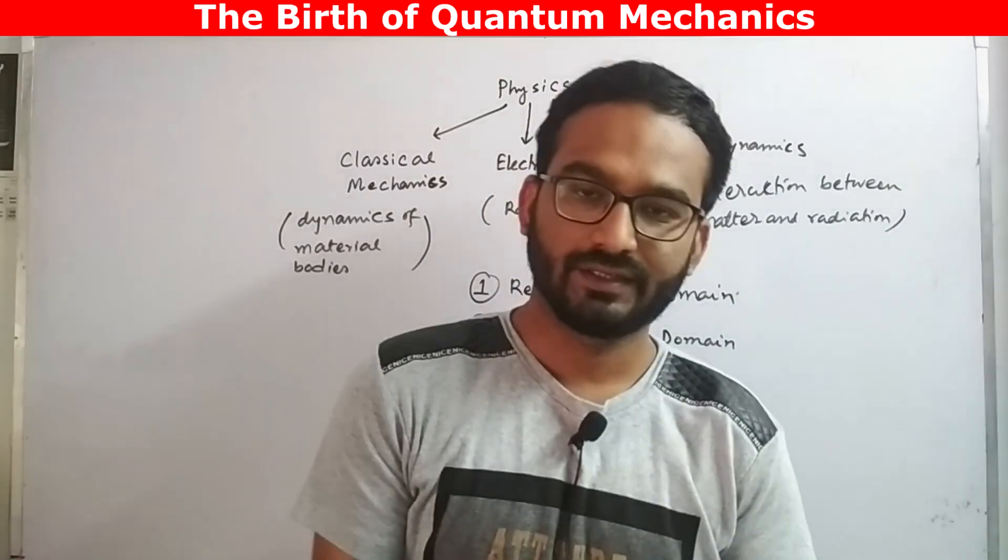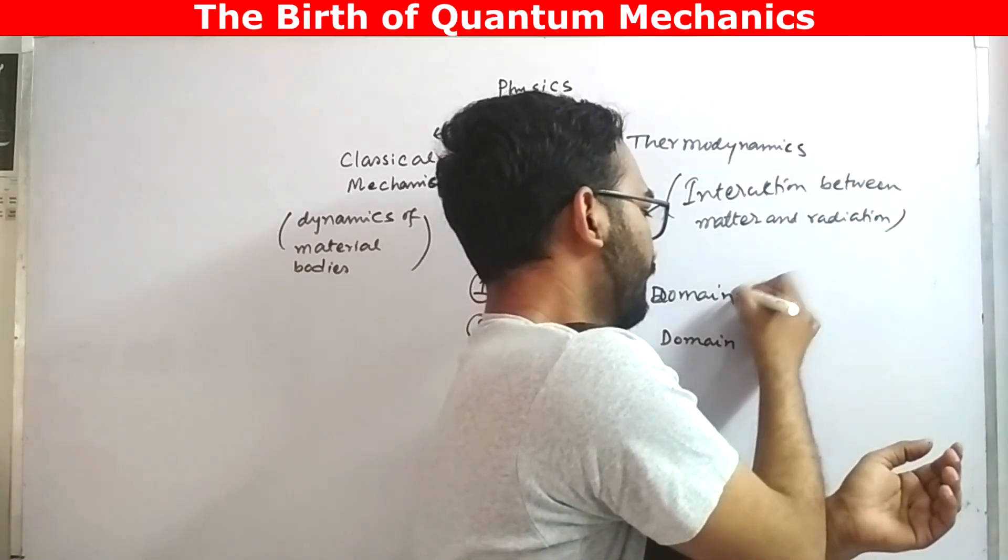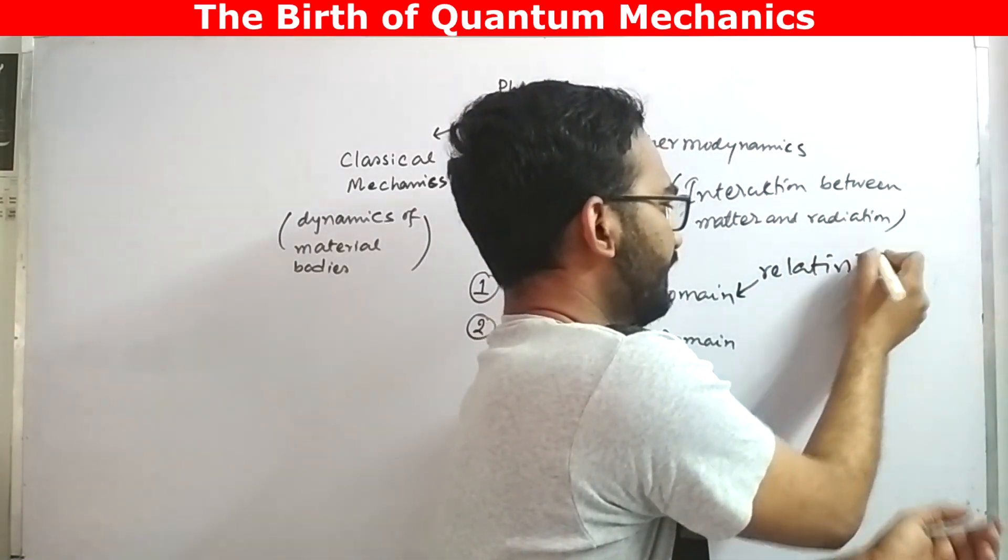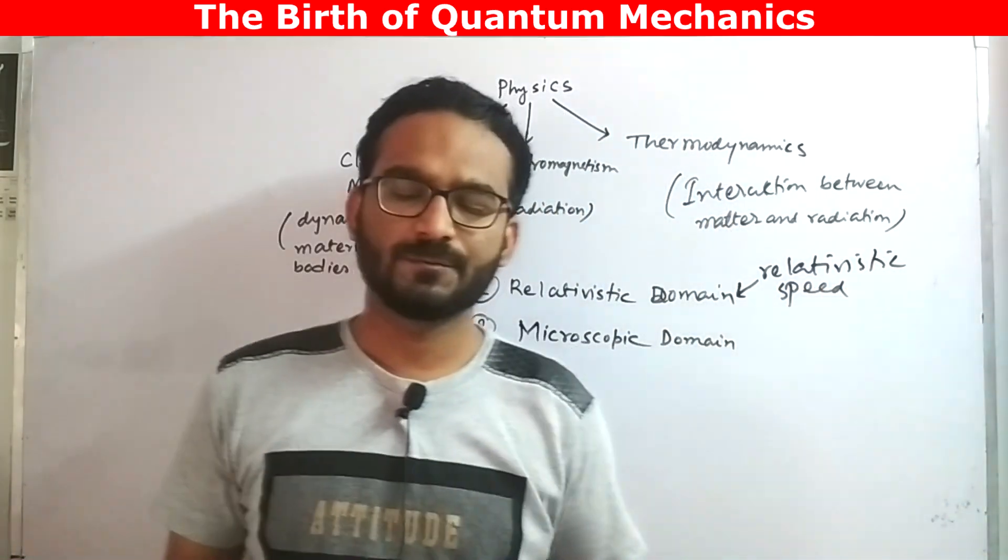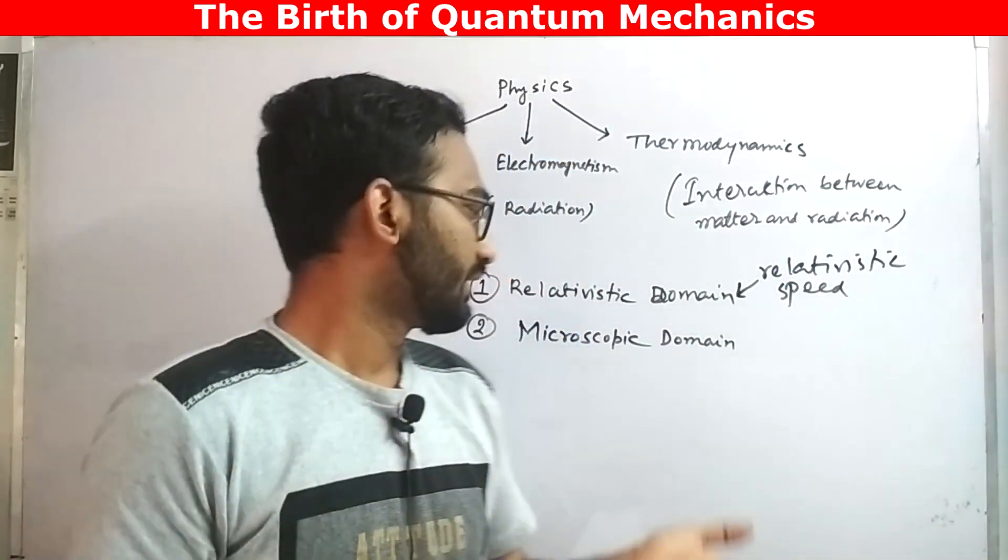In case of general relativity, we have seen that Newtonian mechanics becomes invalid in case of relativistic region, in case of relativistic speed. So when a particle or a material body moves in relativistic speed we cannot apply Newtonian mechanics. We need to apply something different.